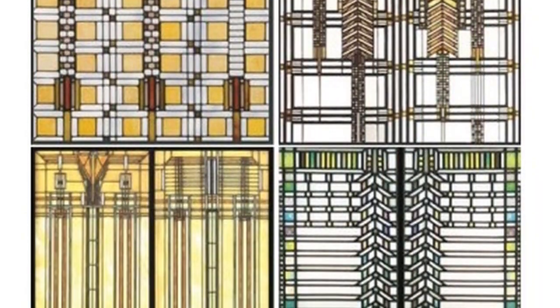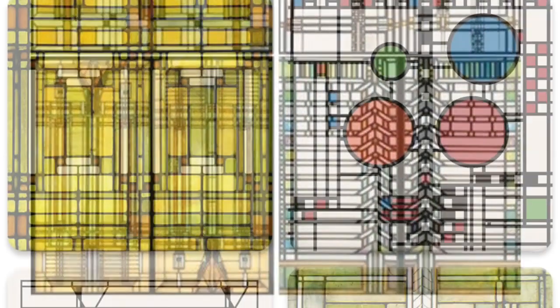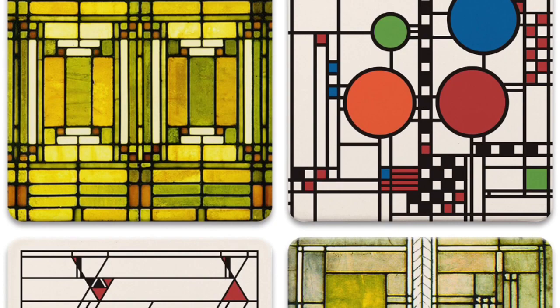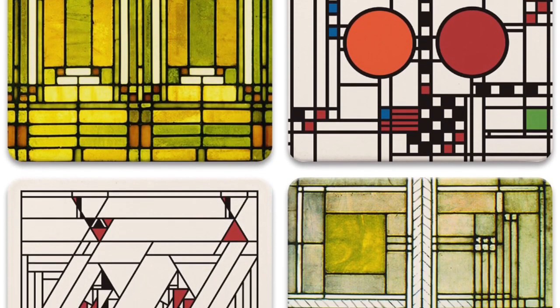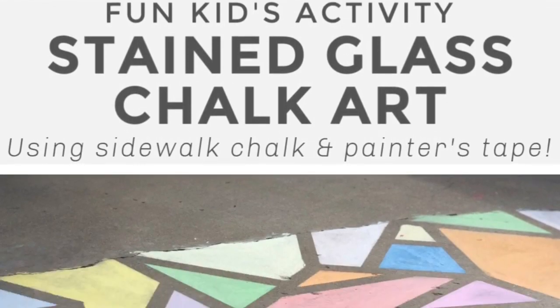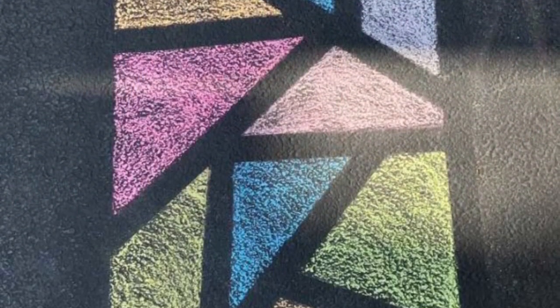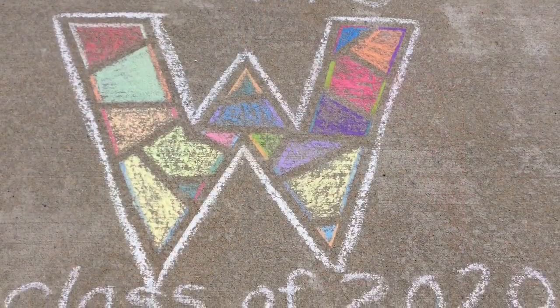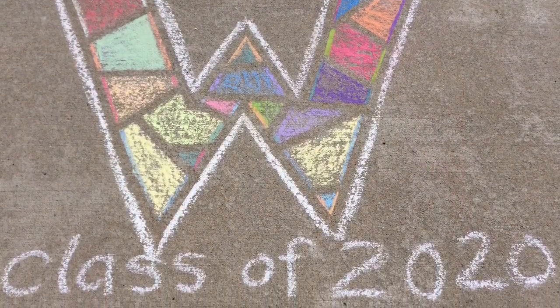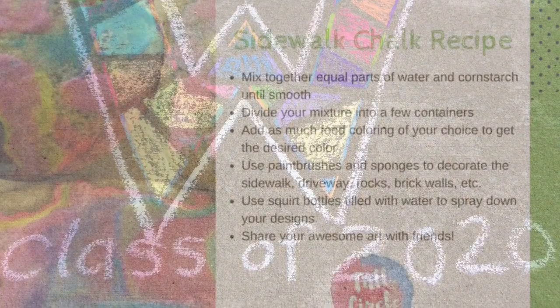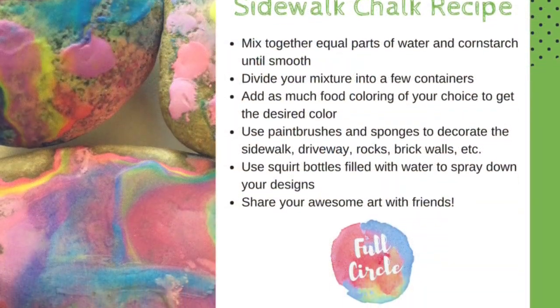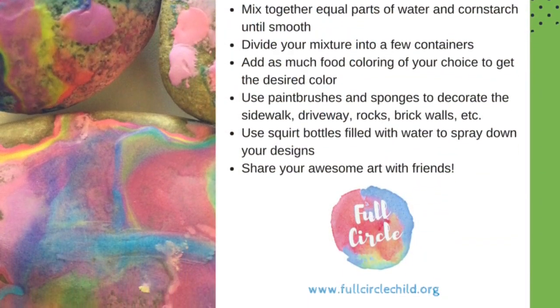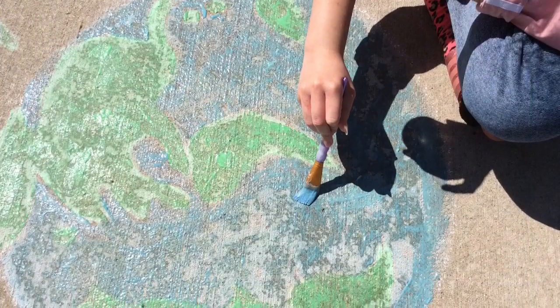Frank Lloyd Wright also designed interiors for some of his buildings. He is famous for his stained glass windows. Perhaps you could design stained glass chalk art. Here are some ideas using taped off areas and chalk. Maybe you could find some rocks that write, or make some chalk paint. I used flour instead of cornstarch and it worked great.